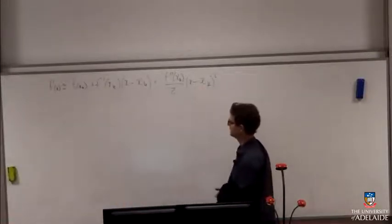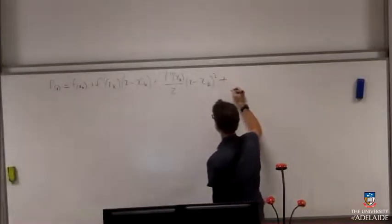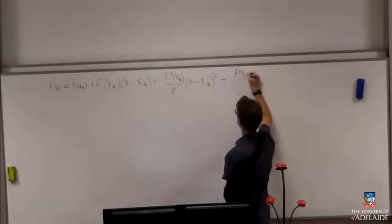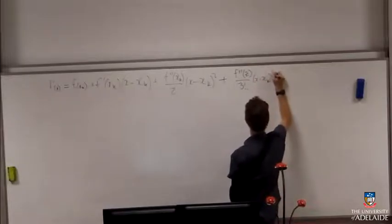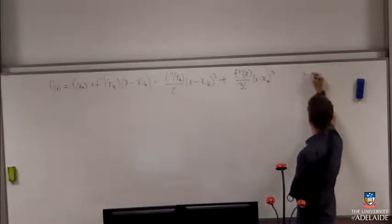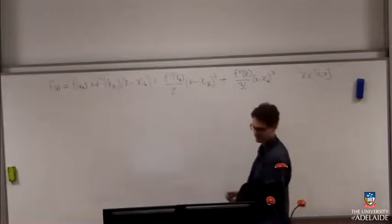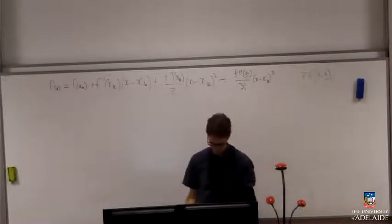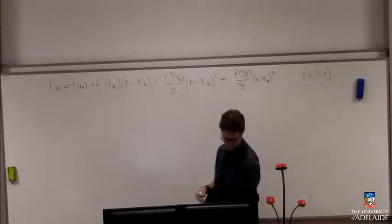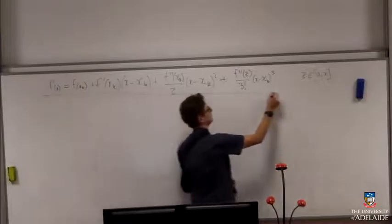We can use this to derive some things about our Taylor series. There's the expression I had before — let's make that exact by shoving in this fudge factor, this error term. Let's go with a cubic term. And z is between a and x — if x is to the left of a you need to flip around, but you know what I mean. Let's put that in a box and refer back to it later.